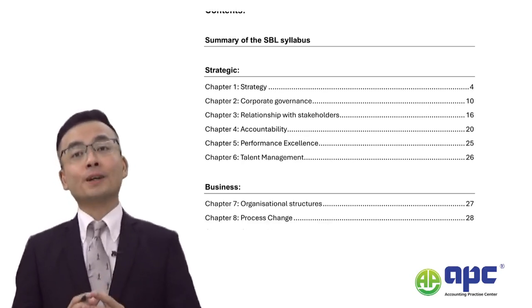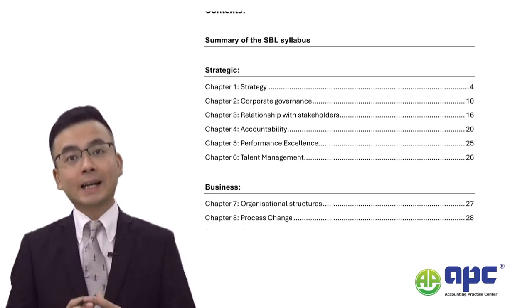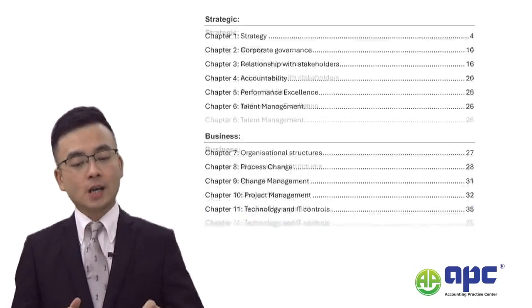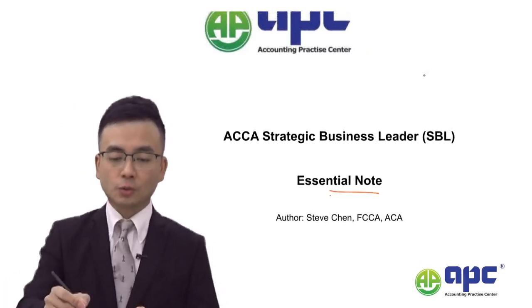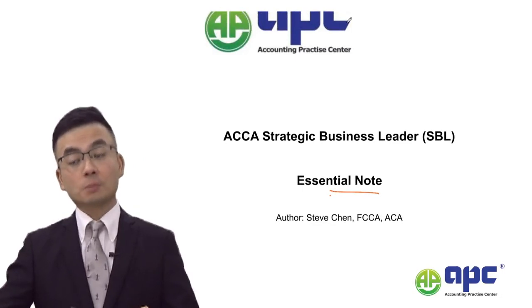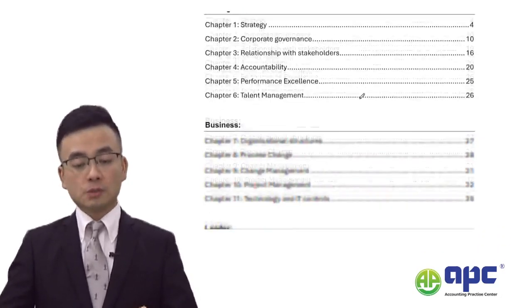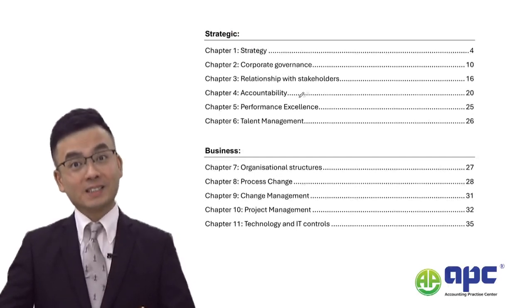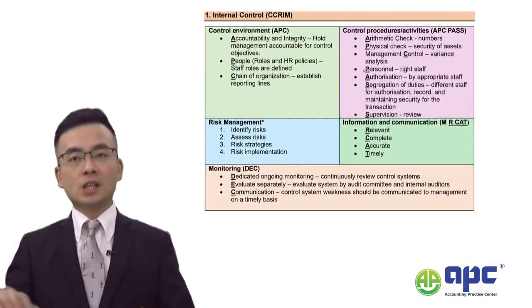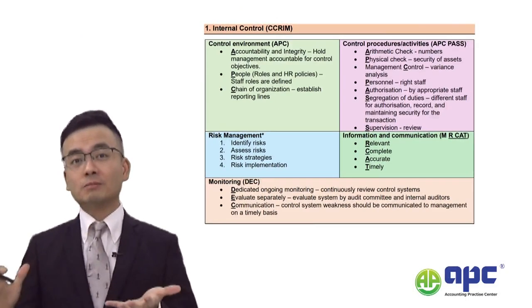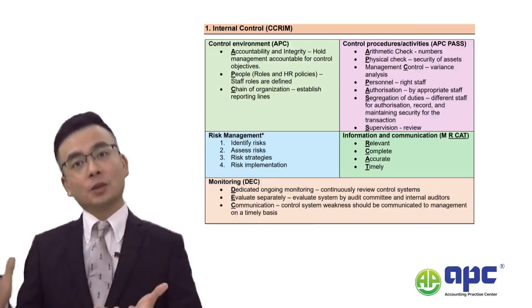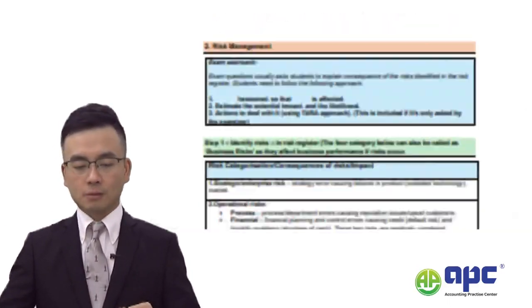Make sure that you always apply this knowledge to the practical case scenario. This is why I've written a special note called the essential note. The total number of pages is approximately 40, summarising all the bits and pieces that you need to know for sure. For example, for internal control, I use the mnemonic CC-REAM to summarise it all together, and I will later apply it to the case, the latest pre-seen, and also the tip questions from our global ACCA resources.